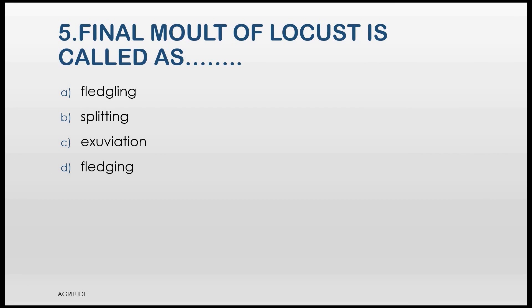Here is the fifth question. Final molt of locusts is called as A. Fledgling, B. Splitting, C. Exhibition, D. Fledging.